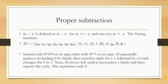Started with 0 raised to m, 1, 0 raised to n on its tape, halts with 0 raised to m minus n on its tape. Machine repeatedly replaces its leading 0 by blank.